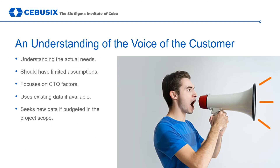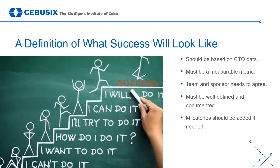In order to understand the voice of the customer, you need to understand what the actual needs of the customer are, and this should be based on data collected from the customer, not just assumptions made by management. There is a need to focus on the critical to quality factors while simultaneously staying within the project scope and budget. We must define what success will look like, but this definition should be based on the critical to quality data. It should be measurable — a metric that can be compared both before and after project completion. The team and the project sponsor need to agree on what will define success for the project, and everything should be documented. If additional milestones are needed in the process, we should add them as well.